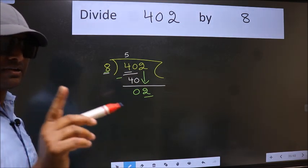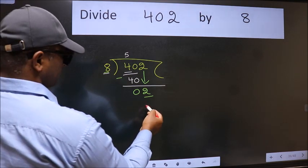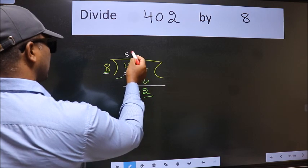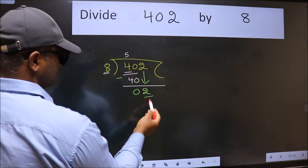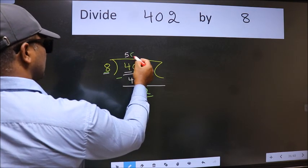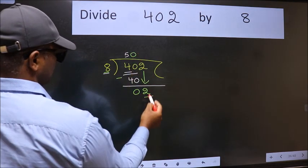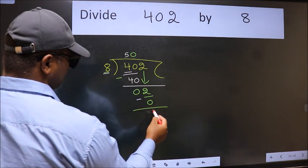Instead of that, what you should think of doing is, which number should we take here? If I take 1, we will get 8. But 8 is larger than 2. So, what we do is, we take 0. So, 8 into 0, 0. Now, we subtract. We get 2.